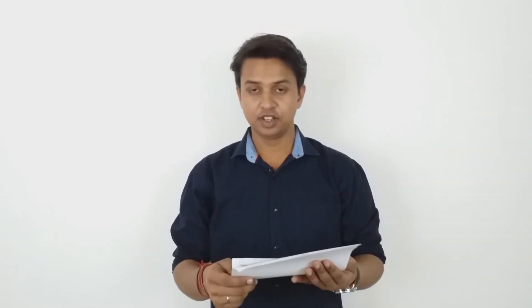Question 35: The equation of the hyperbola whose foci are (6, 5) and (−4, 5) and eccentricity is 5/4 is — the correct answer is option B.